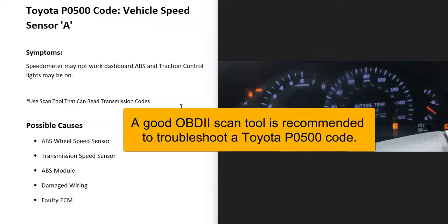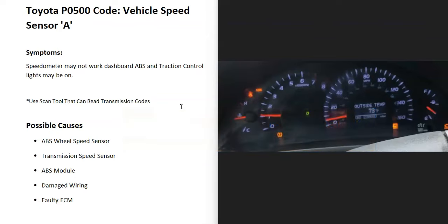If you do have a low-cost OBD2 scan tool, either try to get a scan tool that can read transmission codes or go to an automotive store and see if they can do a scan. Low-cost OBD2 scan tools usually can't read transmission codes, which can help troubleshoot what's wrong with the vehicle.